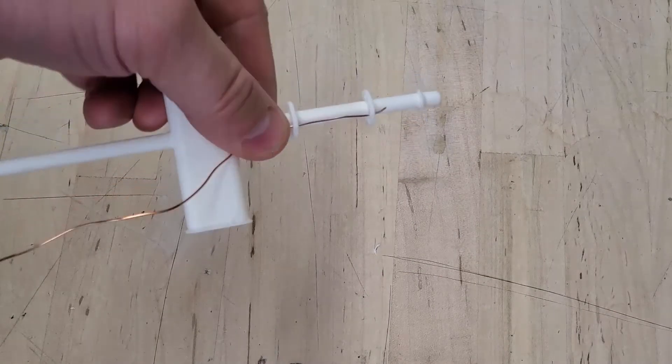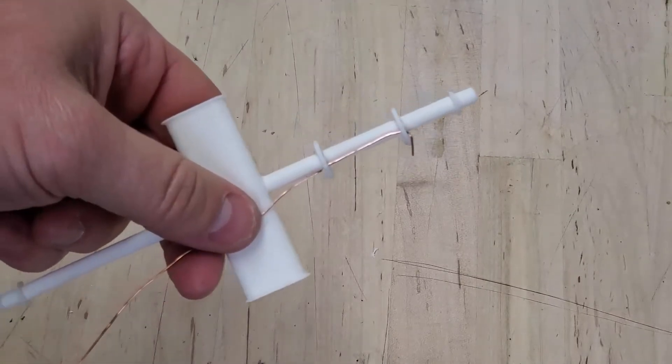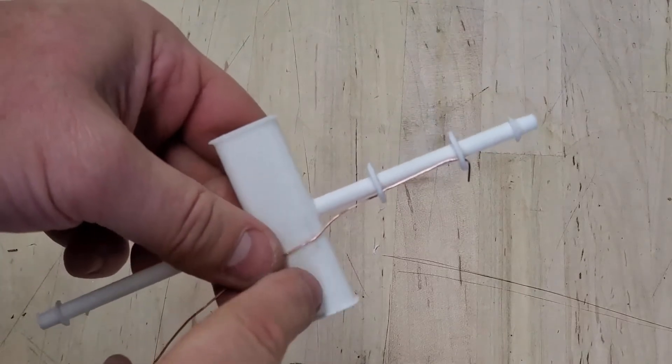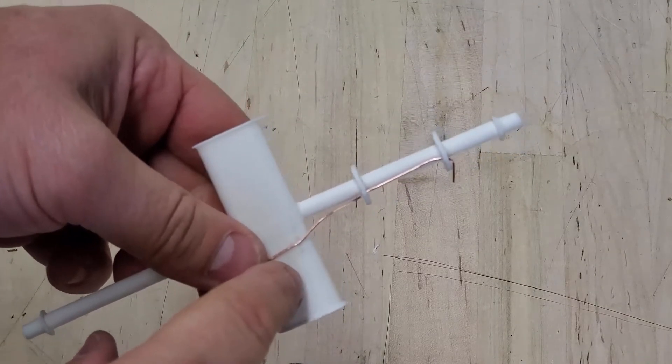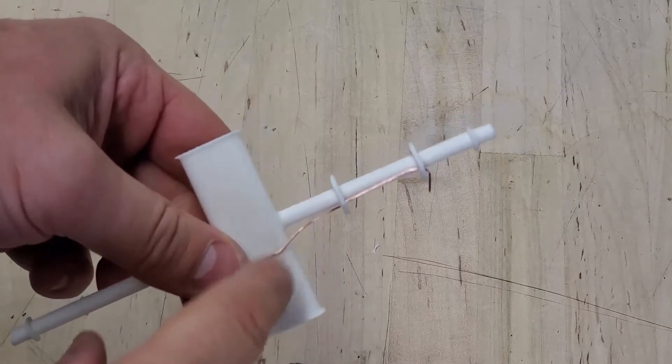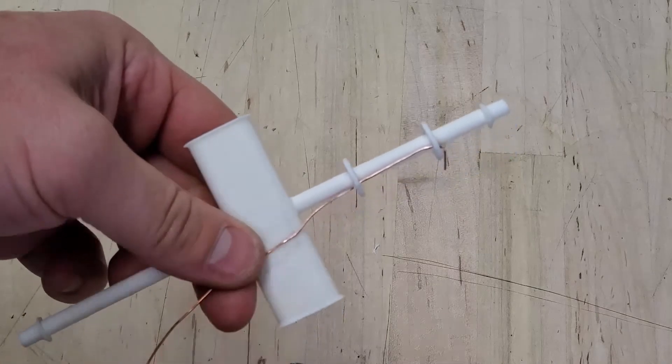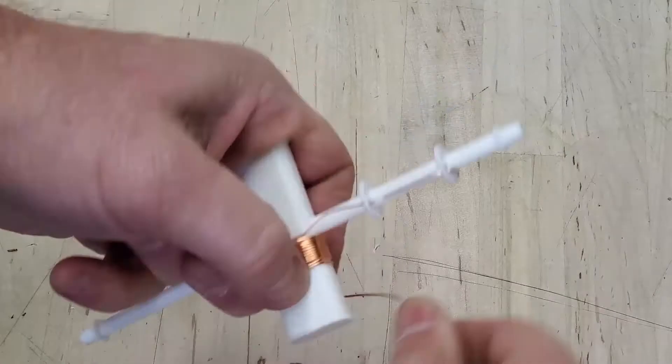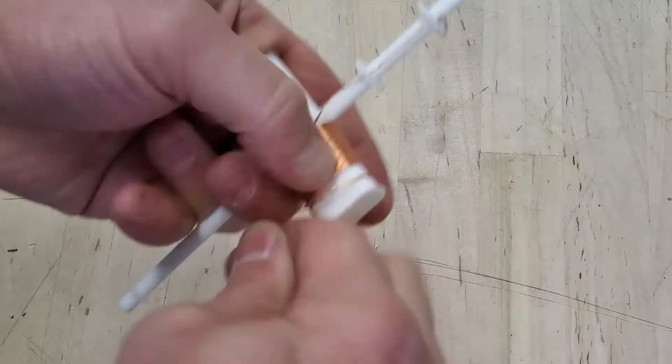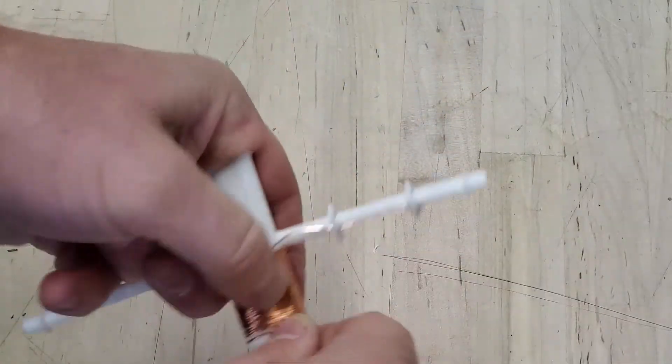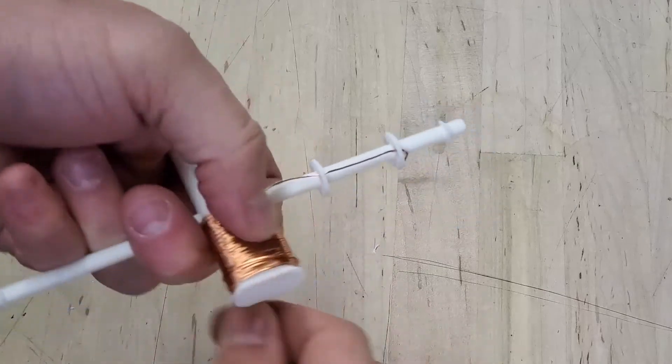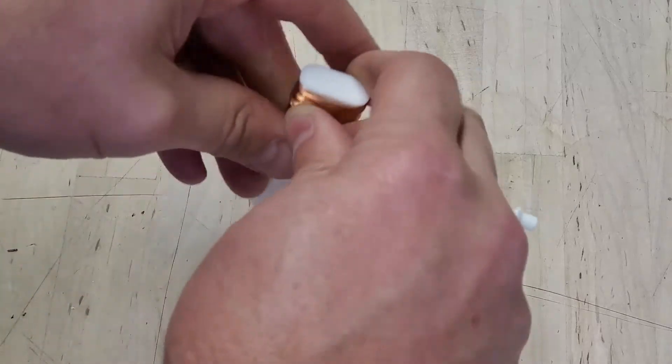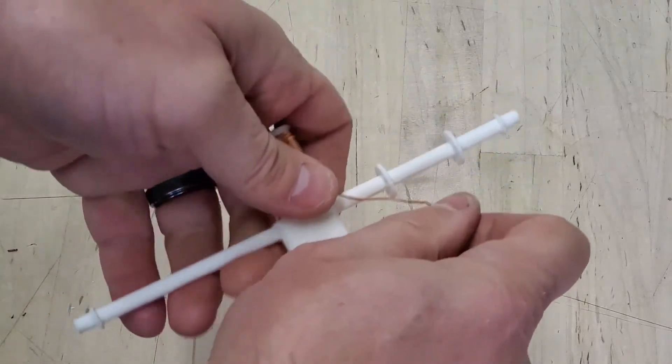Now start wrapping your magnetic wire around both sides of your armature. You're going to want about 30 to 35 coils tightly wound on both sides of your armature. Go ahead and cross your wire over to the other side and repeat this process.